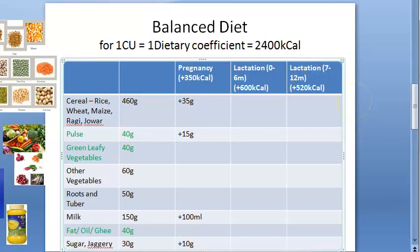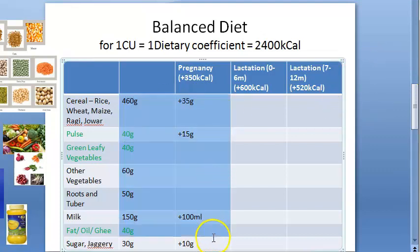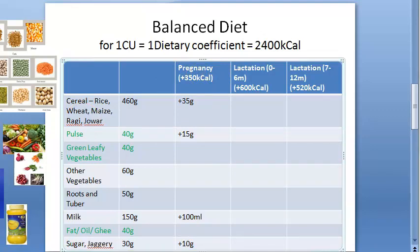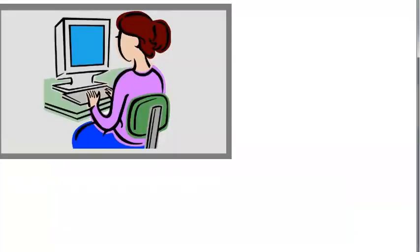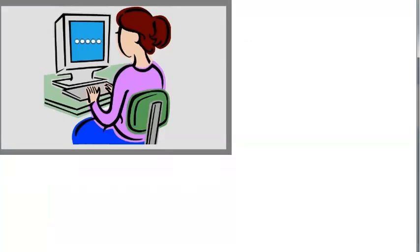There is also a protein requirement in pregnancy: first trimester add 1 gram per day, second trimester add 7 grams per day, and third trimester add 23 grams per day — so lots of protein is required in the third trimester. Other nutritional recommendations include vitamin A, iron, folic acid, calcium, thiamine, and riboflavin during pregnancy and lactation.